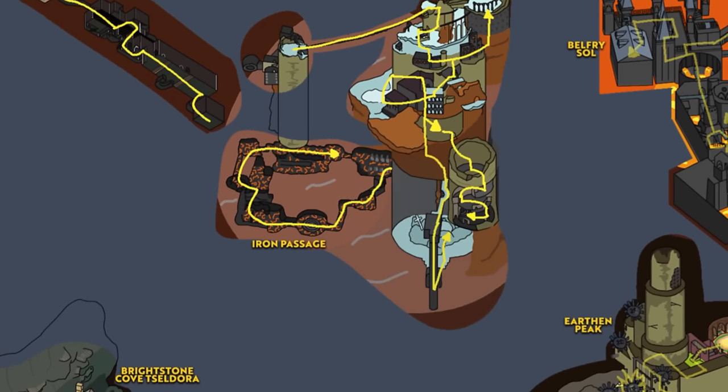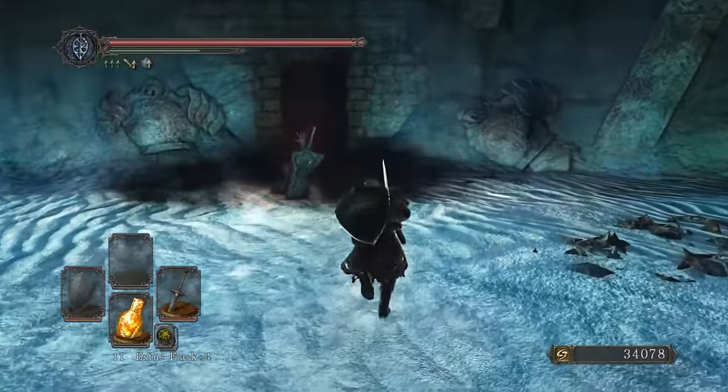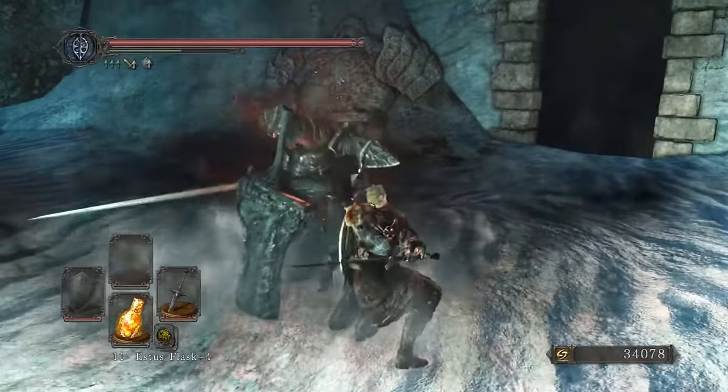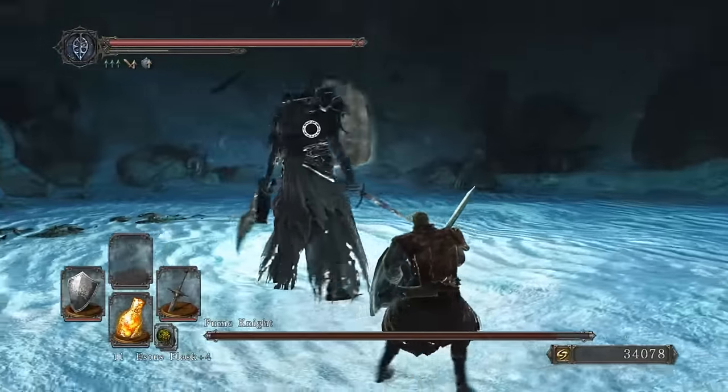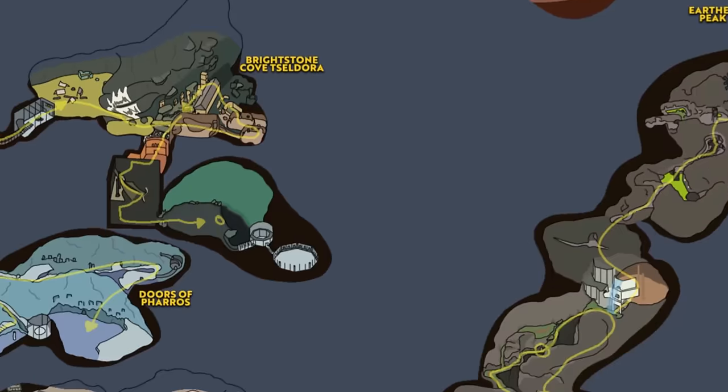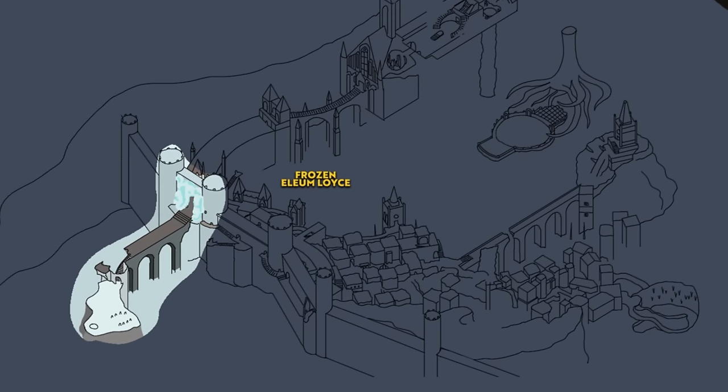Lastly, taking the elevators down leads to a long path to the very base of the tower, where inside a giant corpse we battle the Fume Knight, who is made easier if we saved some smelter wedges. We can claim the Crown of the Old Iron King and take our leave. Finally, teleporting from the Shrine of Winter with the frozen flower will lead to the frozen Eleum Loyce.